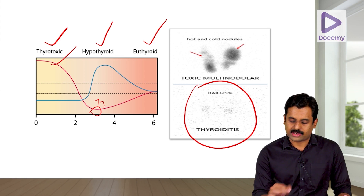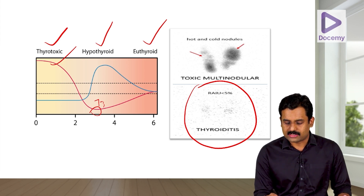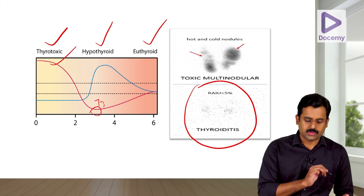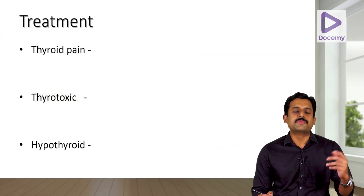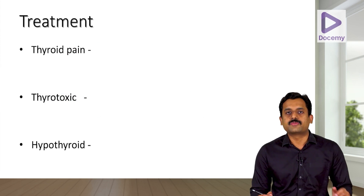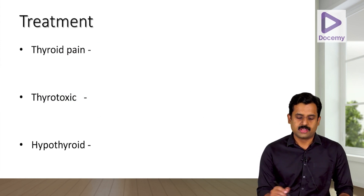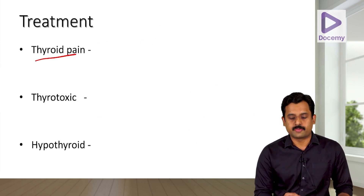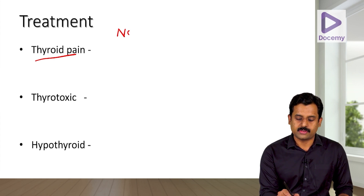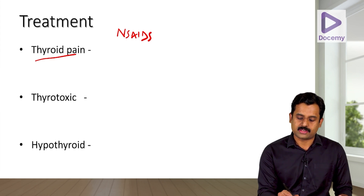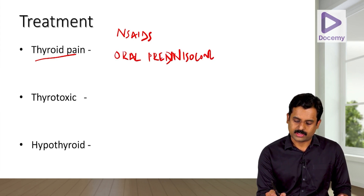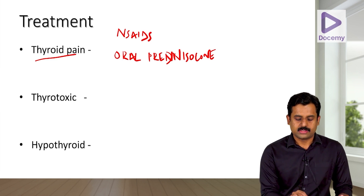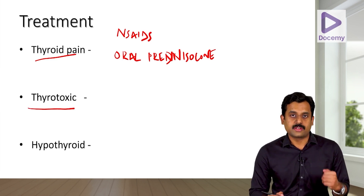Treatment of de Quervain's thyroiditis can be divided into symptomatic management and treatment of thyroid hormone levels. For thyroid pain, start with NSAIDs. If the patient does not improve with NSAIDs, consider oral prednisolone — steroids — for pain relief.